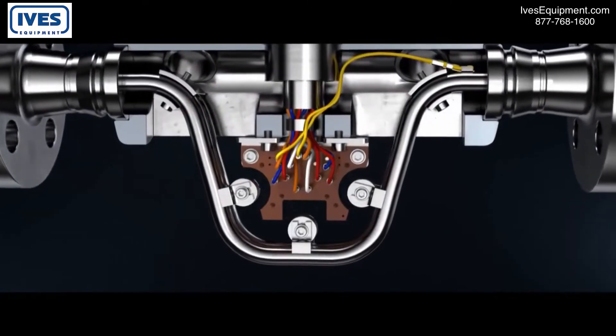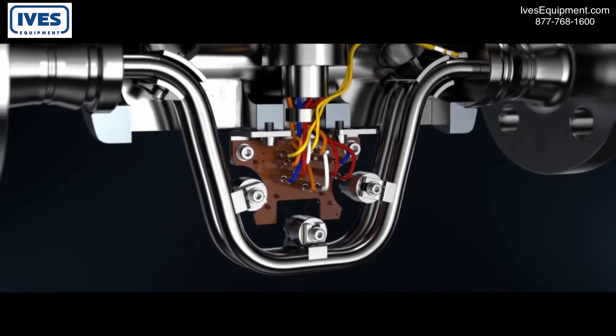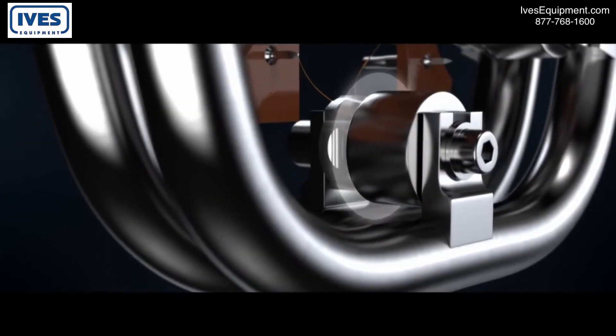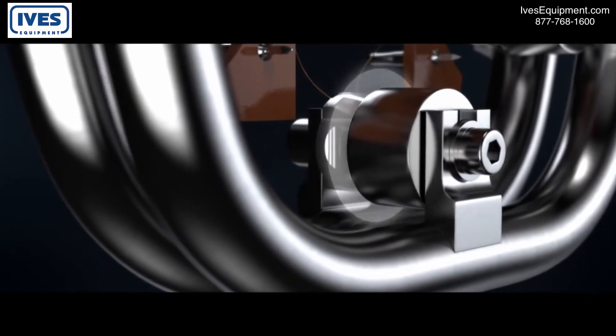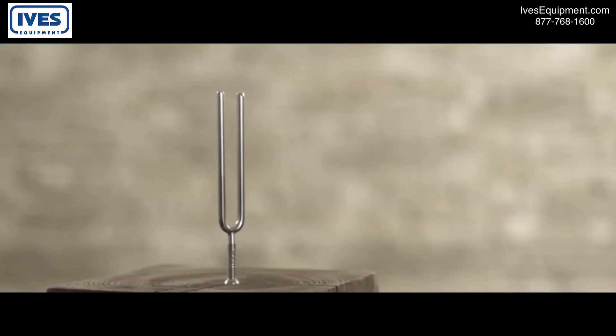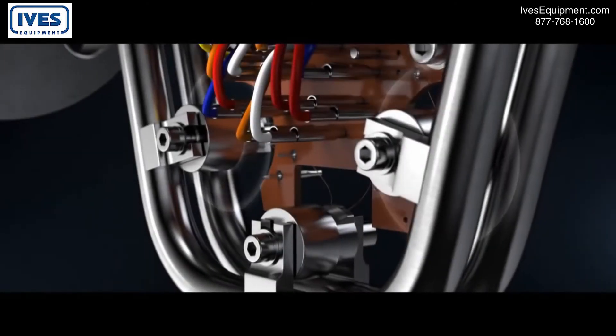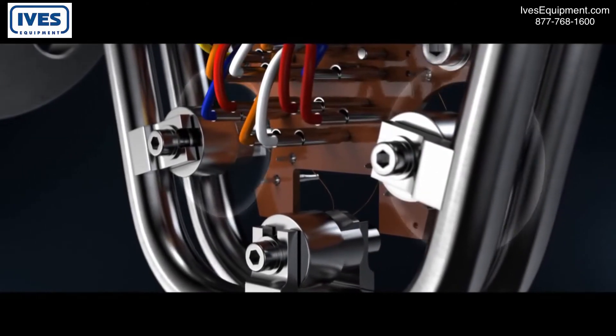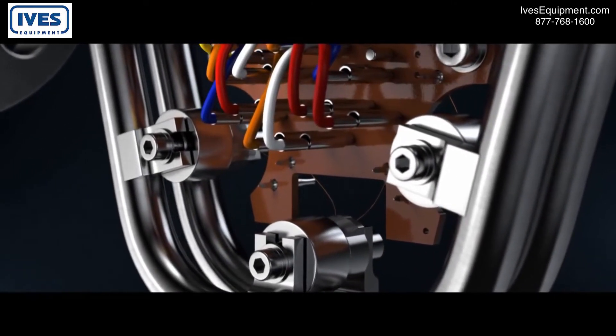Two symmetric metal tubes are set vibrating. This is ensured by a driver coil in the central section. The tubes oscillate with a resonance frequency, similarly to a tuning fork. The oscillation is measured precisely by two pickups, at the inlet and outlet sections.